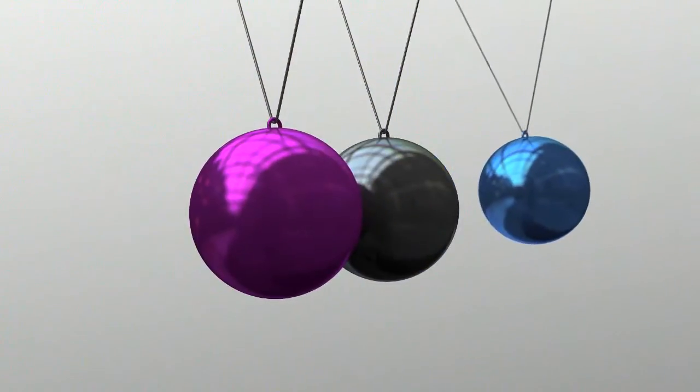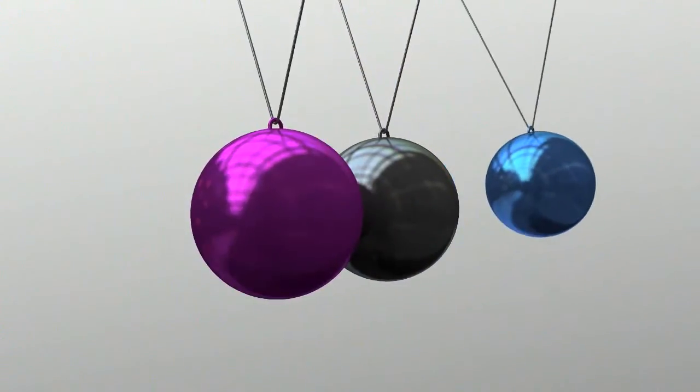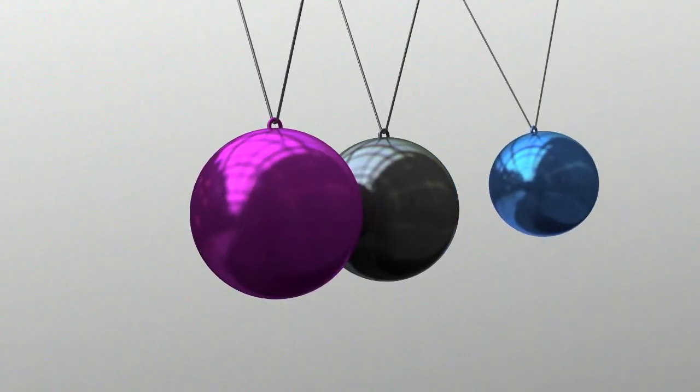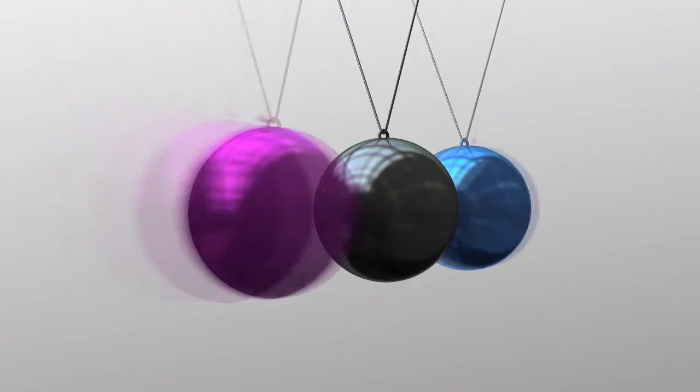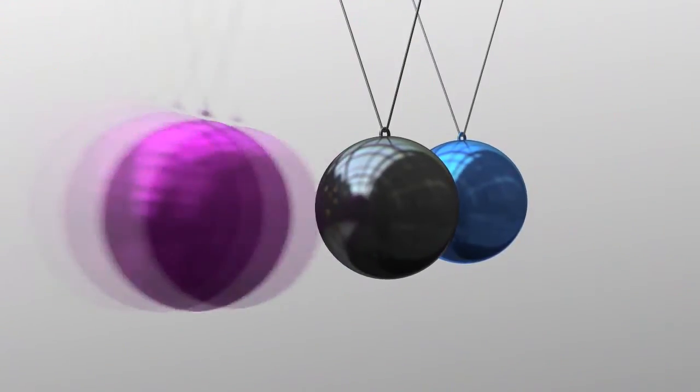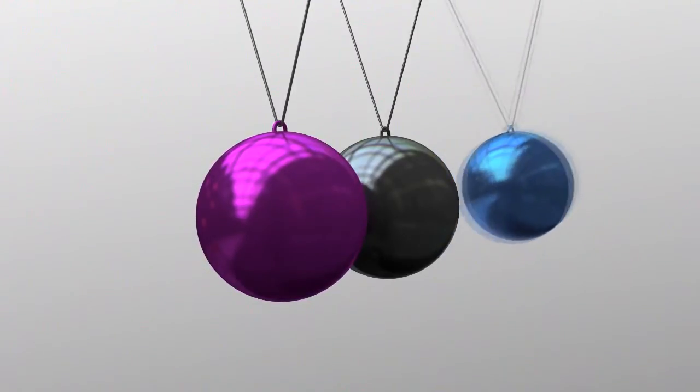The bumping method engages a simple law of dynamics. What happens when you put three balls in a straight line, knock out one of them and then let it fall back into place? The impact will force only the last ball to separate. The others will remain in position.